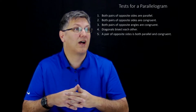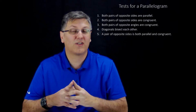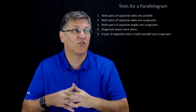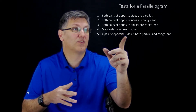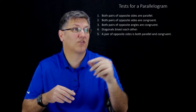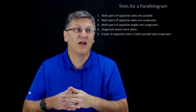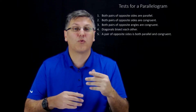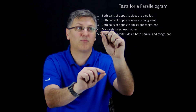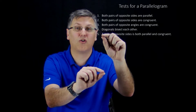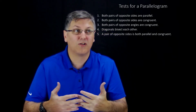The fourth one is that if the diagonals bisect each other — I want to work an example to actually show that. And then the last one is that a pair of opposite sides are both parallel and congruent. So if we have a quadrilateral where the top sides are congruent as well as parallel, then it's going to be a parallelogram.